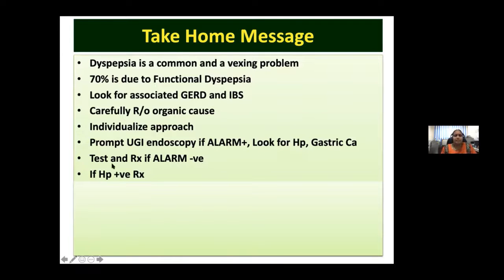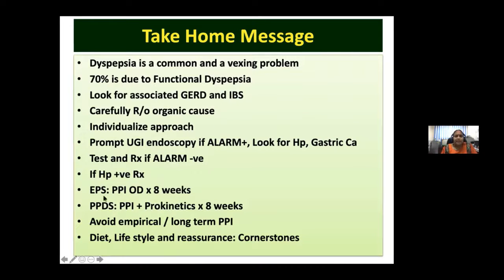If no alarm symptoms, test and treat for H. pylori using urea breath test or stool antigen test. If H. pylori positive, treat. For EPS, PPI OD for eight weeks then stop; for PDS, PPI plus or minus prokinetics for eight weeks then stop. If symptoms persist, try tricyclic antidepressants. Avoid empirical long-term PPI therapy — a major problem in our country. Diet, lifestyle, and reassurance are the cornerstones of management.